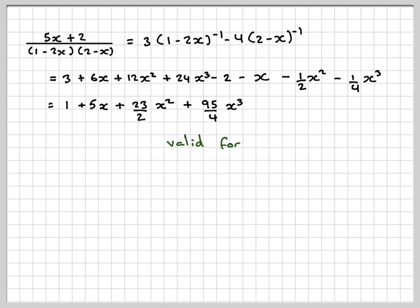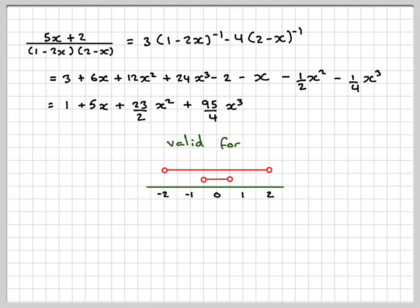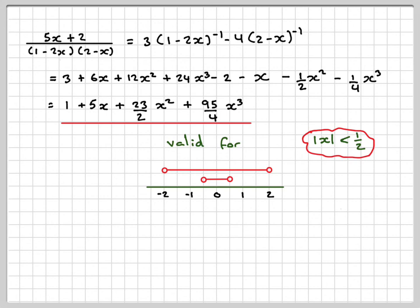Since we combine both expansions, we take the intersection of their validity ranges: |x| < 1/2 and |x| < 2. So the combined expansion is valid for |x| < 1/2. This video has demonstrated using partial fractions and then expanding each partial fraction to find the cubic expansion of the original expression.